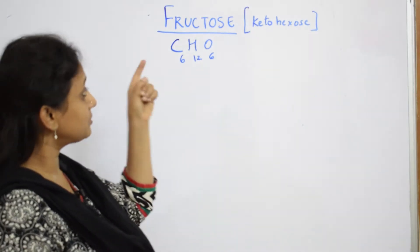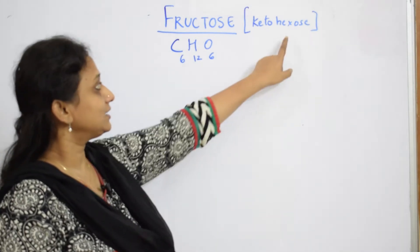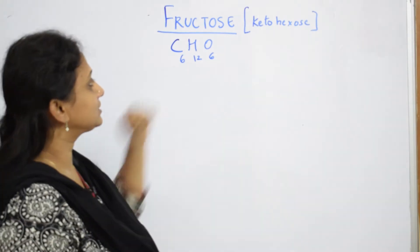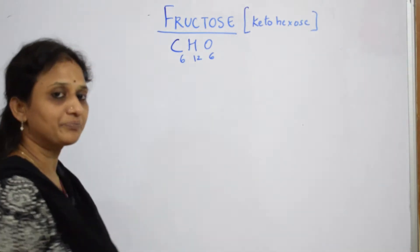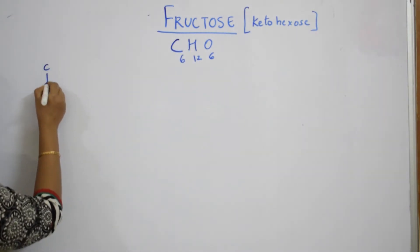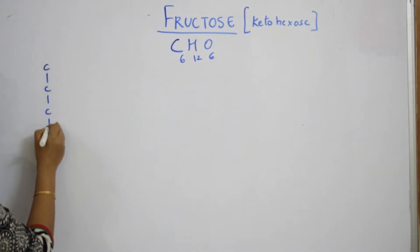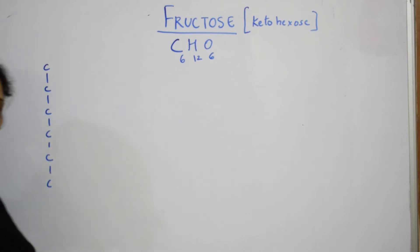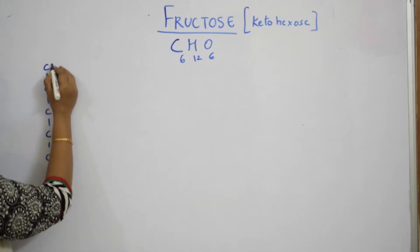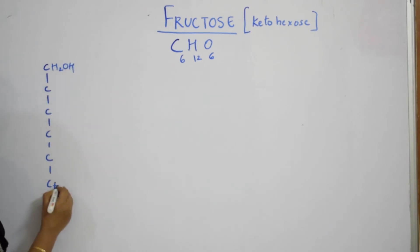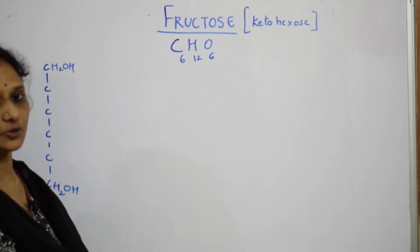When I speak about fructose, basically there are six carbon atoms — hexose means six carbon atoms. Just write one, two, three, four, five and six. The first carbon and the last carbon contains a CH2OH group.